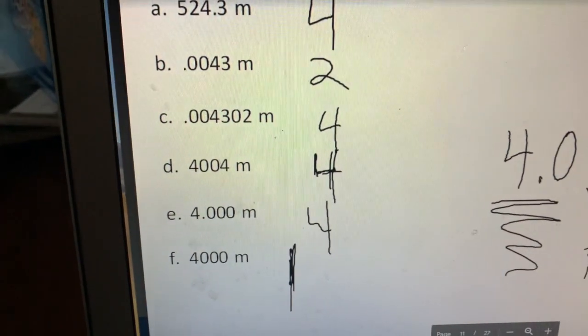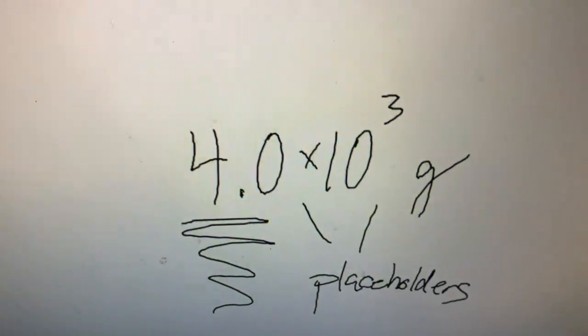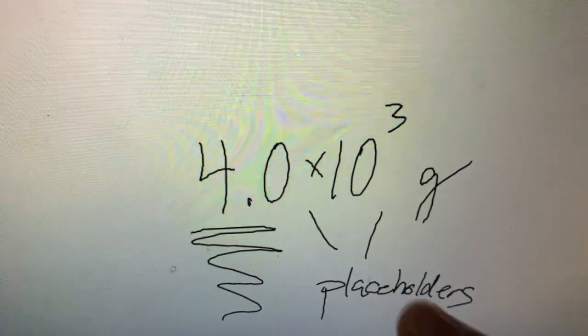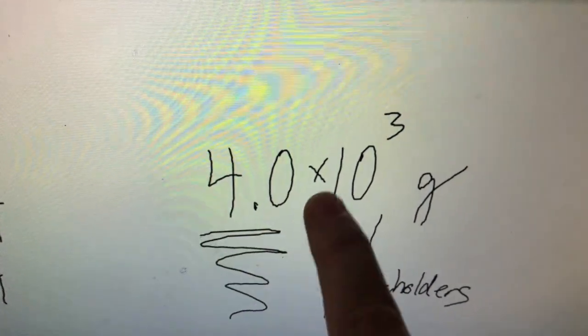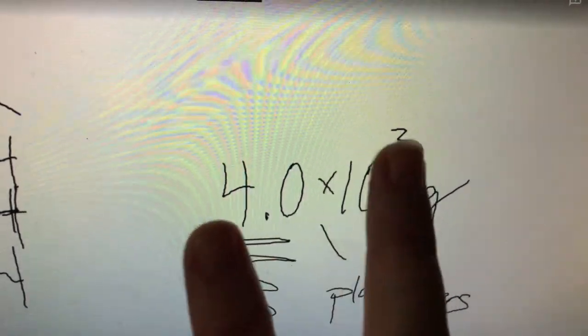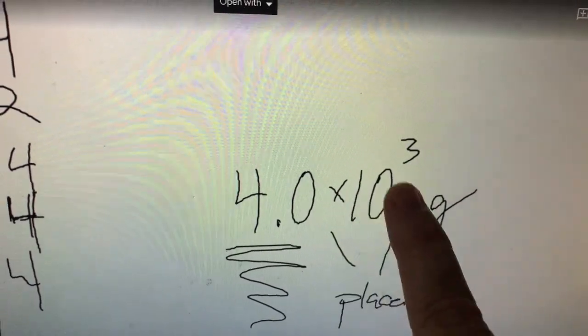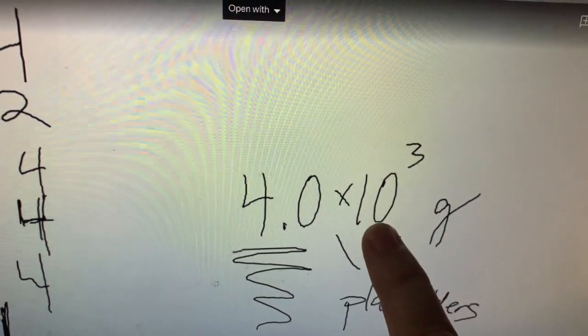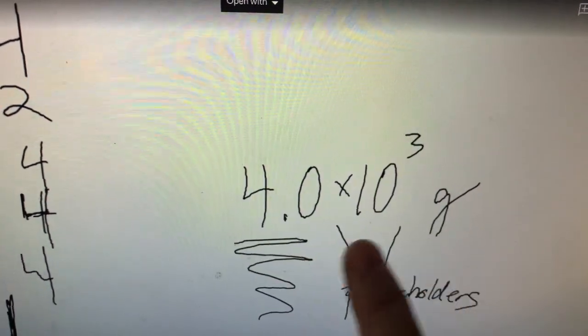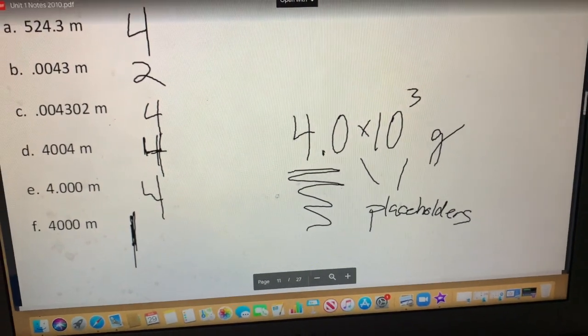Now sometimes you're going to be given numbers that are in scientific notation. When given scientific notation, you're going to look at this portion of the number to determine your significant figures. So in this case that's two. The times ten to the third, that counts as placeholders. So in this measurement there are simply two significant figures.